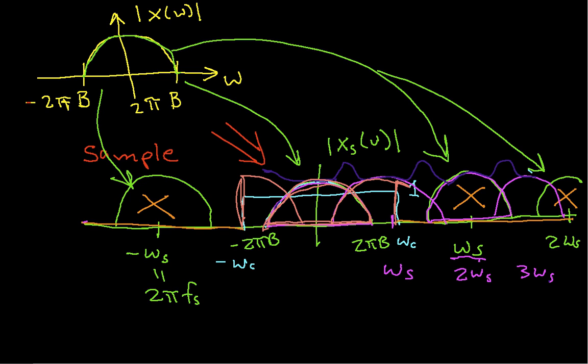So in order for aliasing not to occur, you can see that we need the condition that 2 pi b, or again, b is the bandwidth of the signal, is less than omega s over 2. Because if I have omega s out here, I need to be able to get this half of the extra spectrum plus this half of the original spectrum that I want into the space without them overlapping. And so this condition here would work.